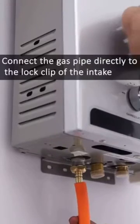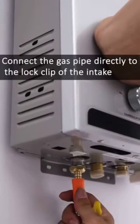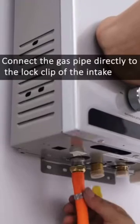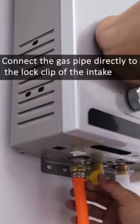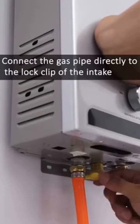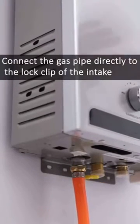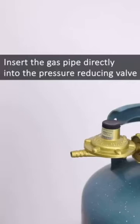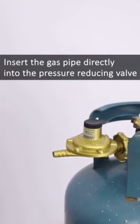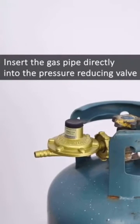Connect the gas pipe directly to the lock clip of the intake. Insert the gas pipe directly into the pressure reducing valve.